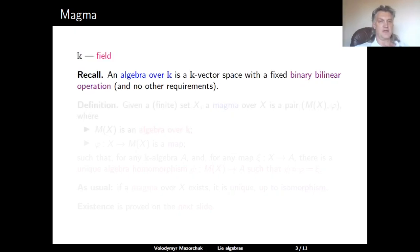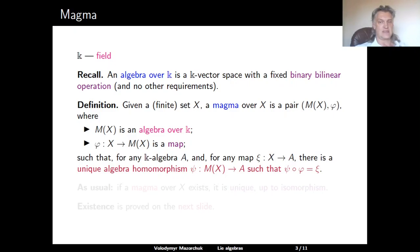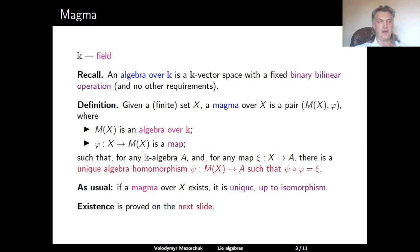Assume that k is a field. Recall that an algebra over k is just a k-vector space with a fixed binary bilinear operation. This operation is not assumed to have any further properties — it's not supposed to be associative or commutative or anything else. Definition: given a set x, a magma over x is a pair m(x) and phi, where m(x) is an algebra over k and phi is a map from x to m(x), such that the pair satisfies the following universal property. For any k-algebra a and any map xi from x to a, there is a unique algebra homomorphism psi from m(x) to a such that the composition of psi and phi equals xi. As usual, for objects defined via a universal property, if we can show that a magma over x exists, then it is unique up to isomorphism. Existence of magmas will be proved on the next slide.